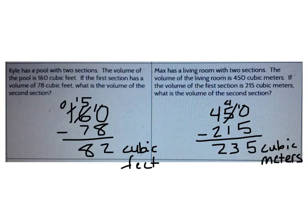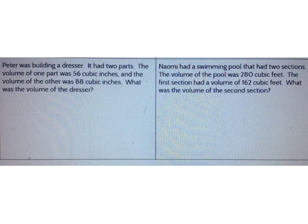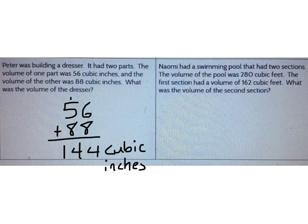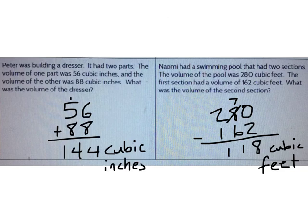Now try two on your own. Peter was building a dresser with two parts. One part had a volume of 56 cubic inches and the other had a volume of 88 cubic inches. Knowing both parts, I add to find the total: 144 cubic inches. Naomi had a swimming pool with a total volume of 280 cubic feet. The first section was 162 cubic feet, so the second section was 118 cubic feet — knowing the total and one part, I subtract.